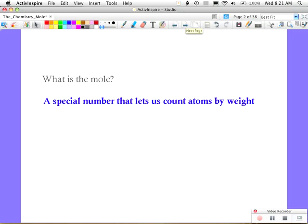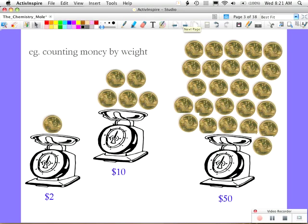Counting by weight is actually something that's not that strange. In fact, banks do it. So if you go to a bank and you give them a $2 coin, they can see that's a $2 coin. But if you give them a pile of coins, they won't count them individually. They'll put them on some scales, and if there's five of them, it'll weigh a certain amount, they'll know that's $10.